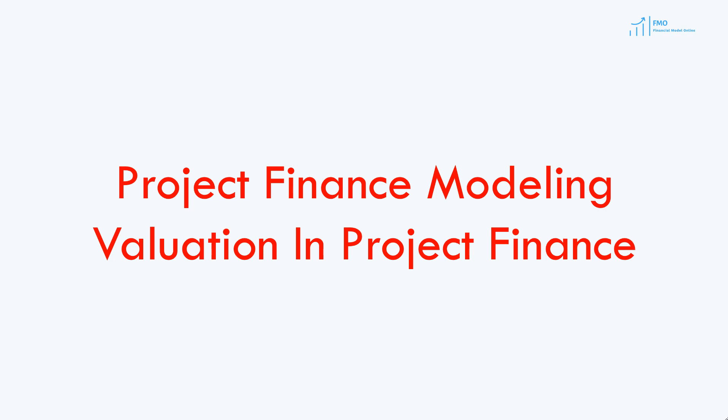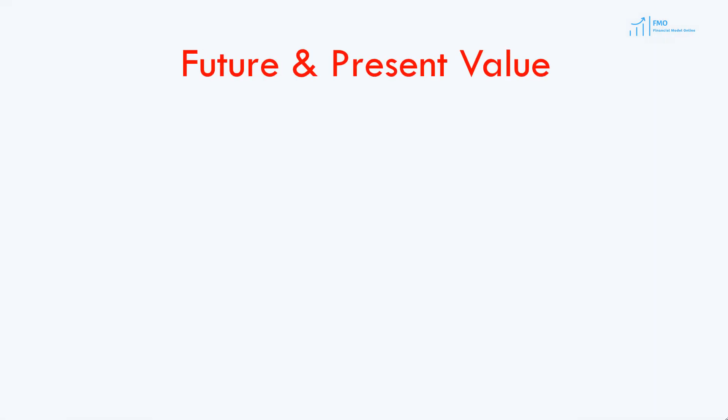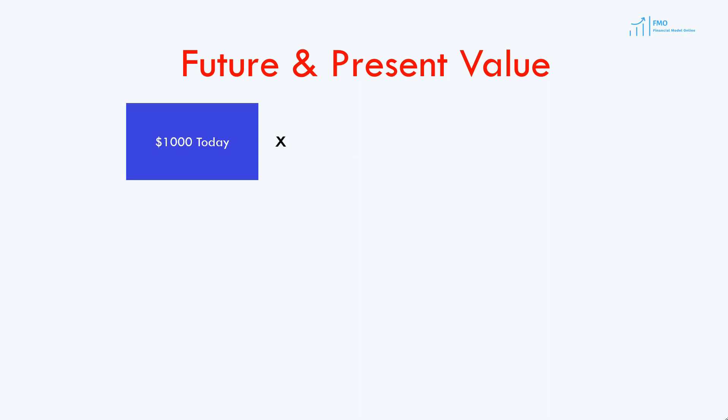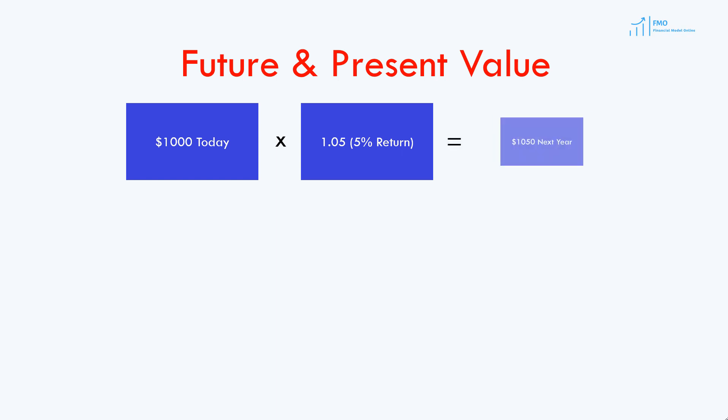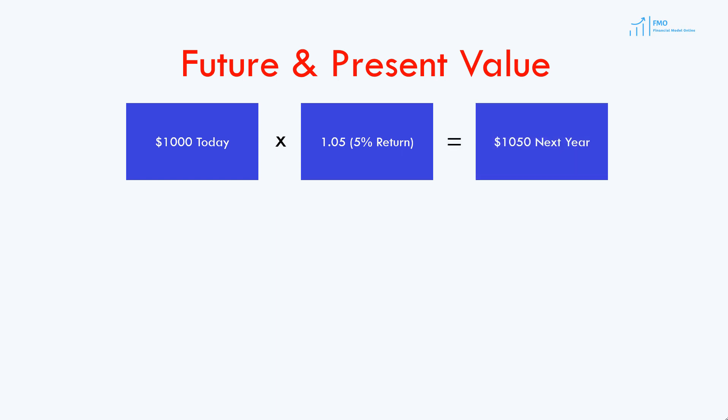In order to understand the concept of valuation, we will have to learn about the future value of money. What is the future value of $1,000 deposited into a bank account at 5% interest rate one year from now? 1,000 times 1.05 is equal to 1,050, so the future value is 1,050.